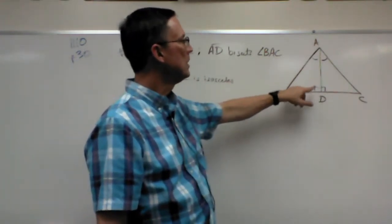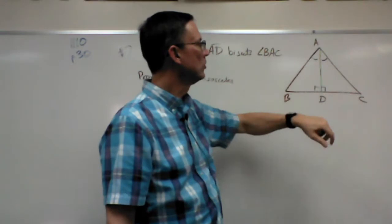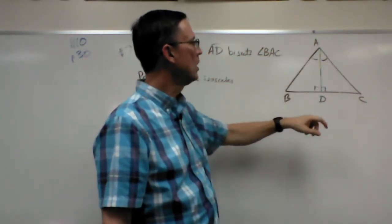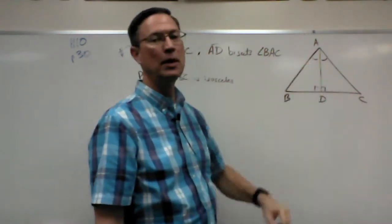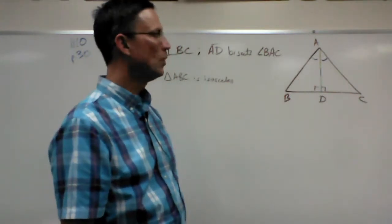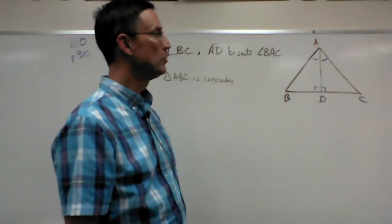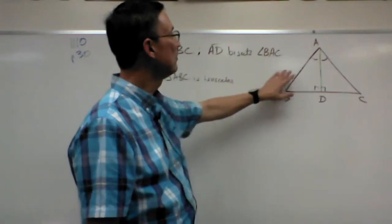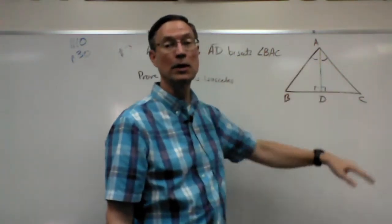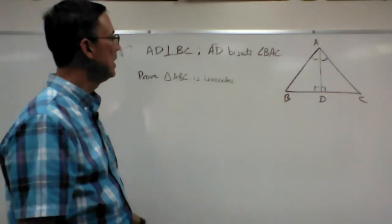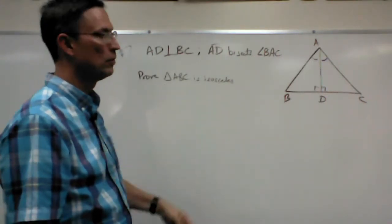Then we can state that these angles are congruent, this side congruent to itself. Therefore, by leg angle theorem, we can state that the triangles are congruent. And if the triangles are congruent, then we have congruent parts. The corresponding parts are congruent. And then we can jump to our final conclusion.